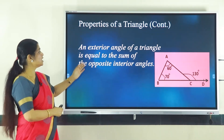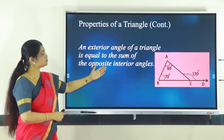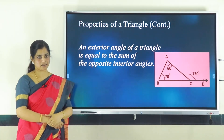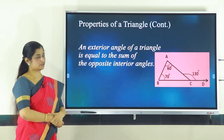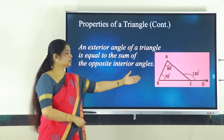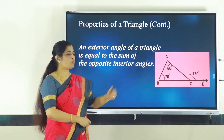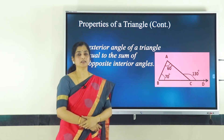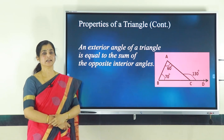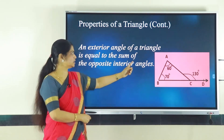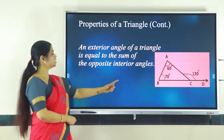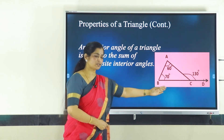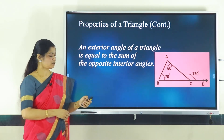Moving on to the next property: an exterior angle of a triangle is equal to the sum of the opposite interior angles. Here, the two interior angles measure 60 degrees and 70 degrees. The exterior angle is 130 degrees. When we add 60 + 70, we get 130, which equals the exterior angle. So the exterior angle equals the sum of the two interior opposite angles.